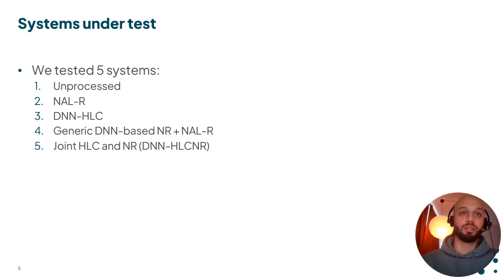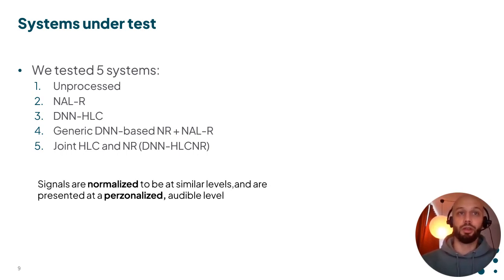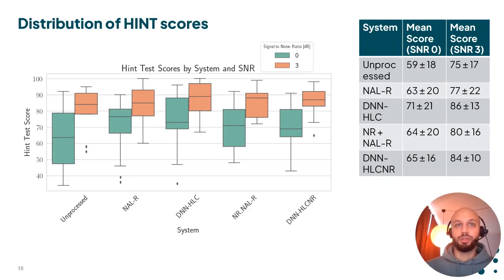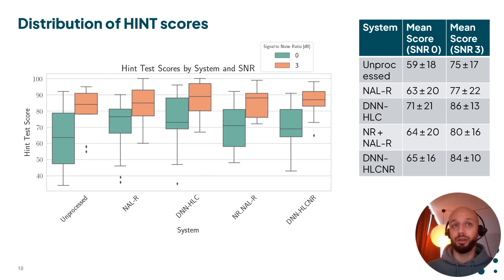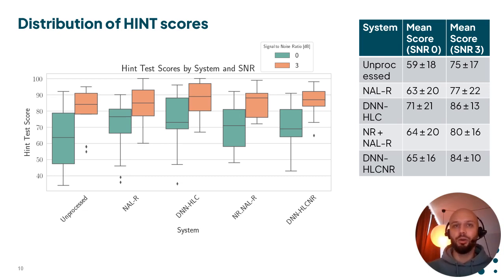All signals were normalized to similar levels and presented at a personalized audible level found pre-experiment for each hearing impaired individual. For the HINT test, we tested our systems at 0 dB SNR and 3 dB SNR using eight-talker babble noise. We found that the DNN-HLC gave the best average score for both SNRs, but none of the relevant comparisons were statistically significant after correcting for multiple comparisons. Using a linear mixed model, we found that all systems improved from the baseline unprocessed system, and although the predicted effect from the DNN-based HLC was largest, there was no statistical evidence that either system was better than the other, except for the unprocessed baseline.